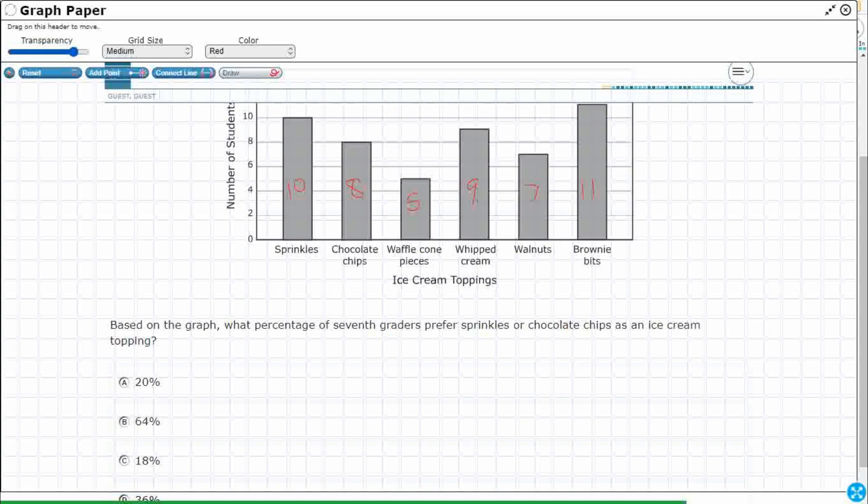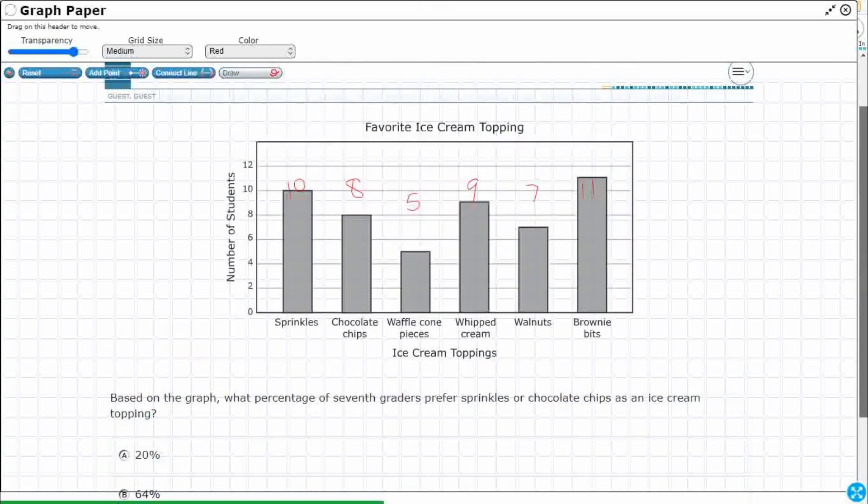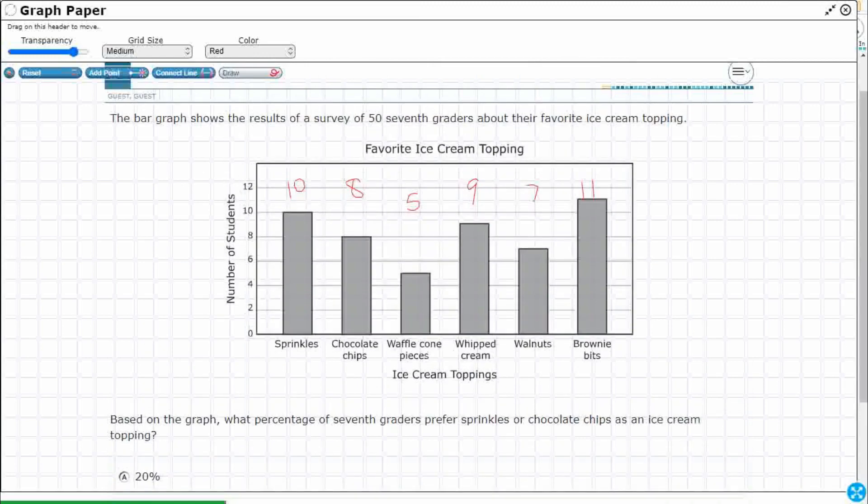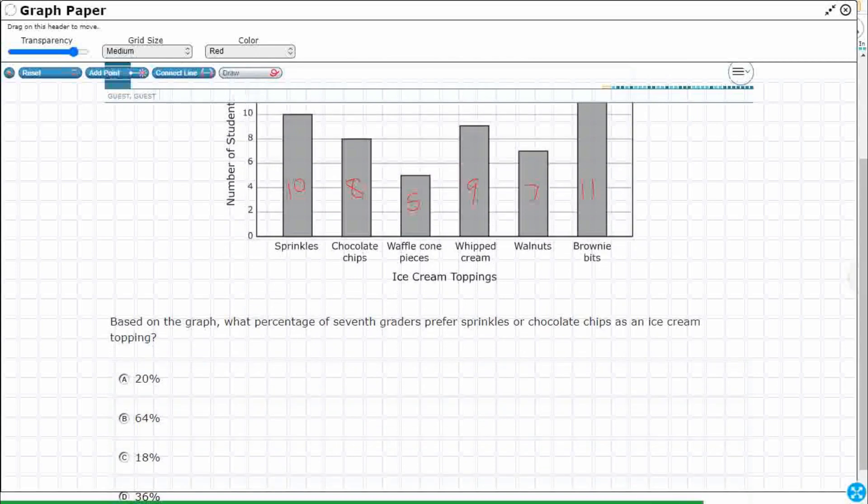Now if you add all these up, we could go ahead and add these up if we want to, but remember at the very top they actually told us there's 50 of them. So 8 plus 10 plus 5 plus 9 plus 7 and 11 equals 50. Now why is that important? Because we need to turn this into a percentage.